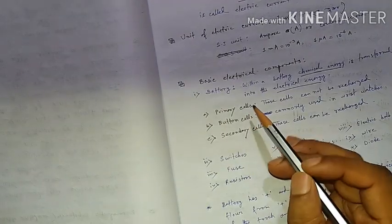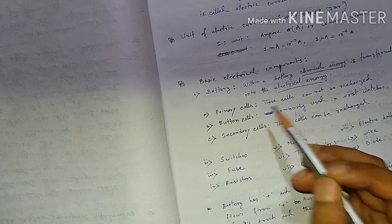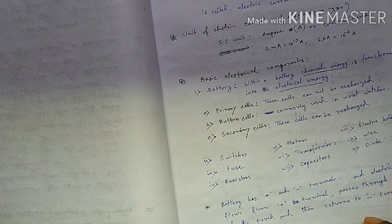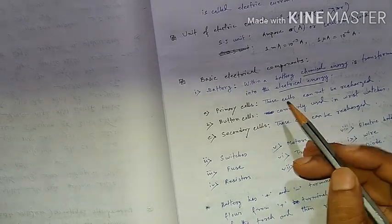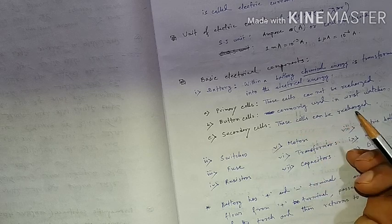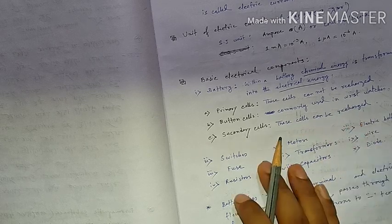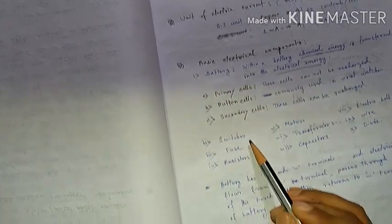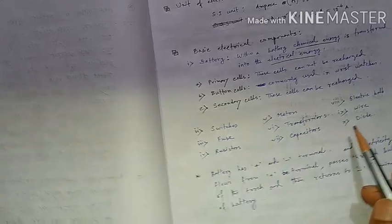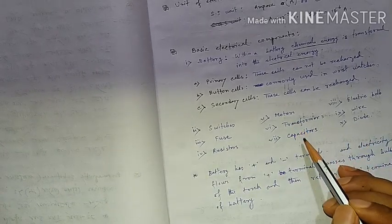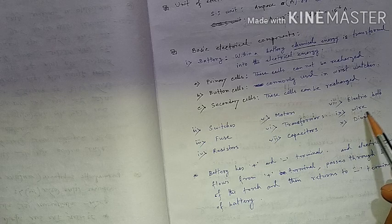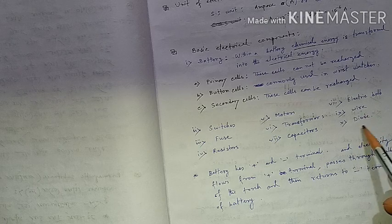Now let's look at the basic electrical components. The basic electrical components are: battery, fuse, resistors, motors, transistors, capacitors, electrical valve, wire, and diode.